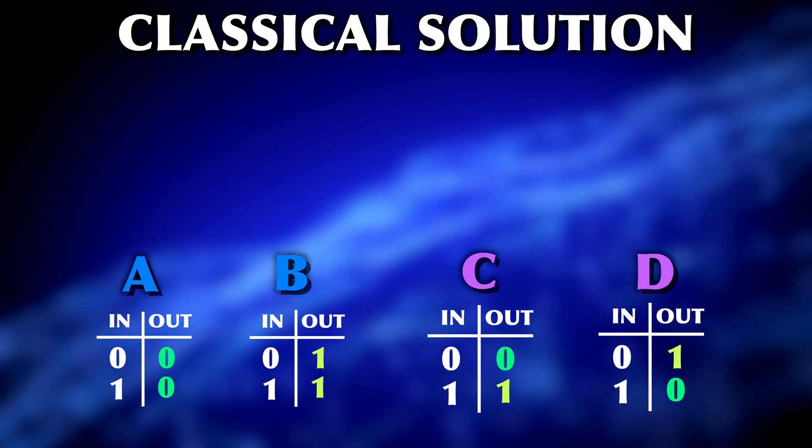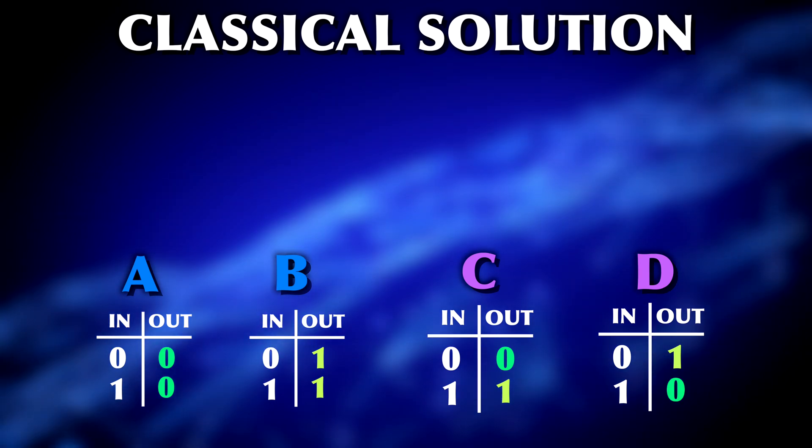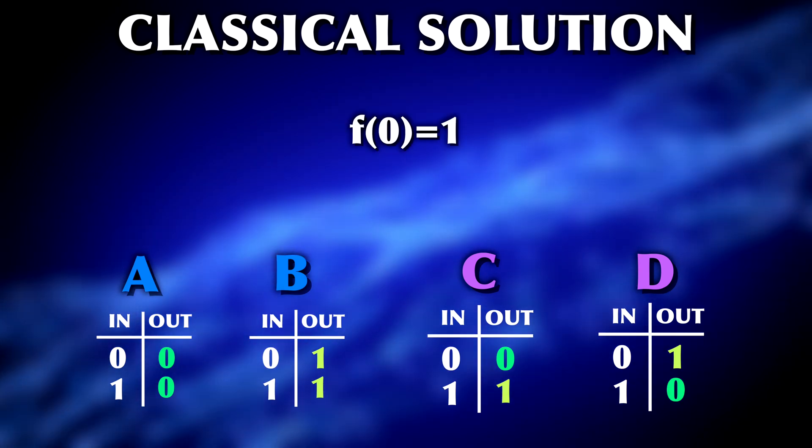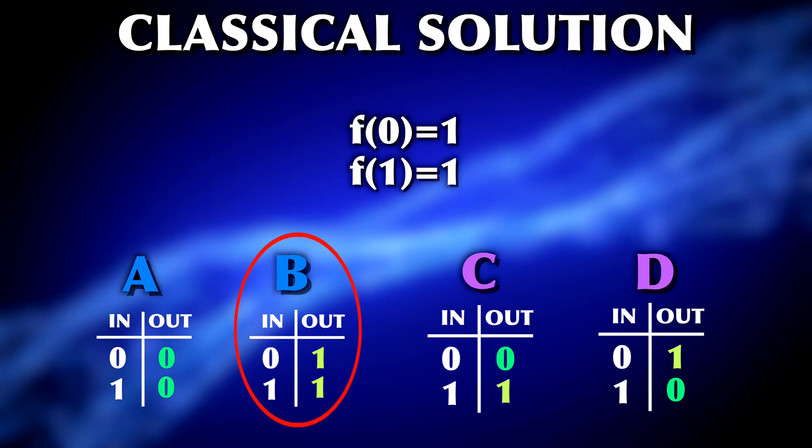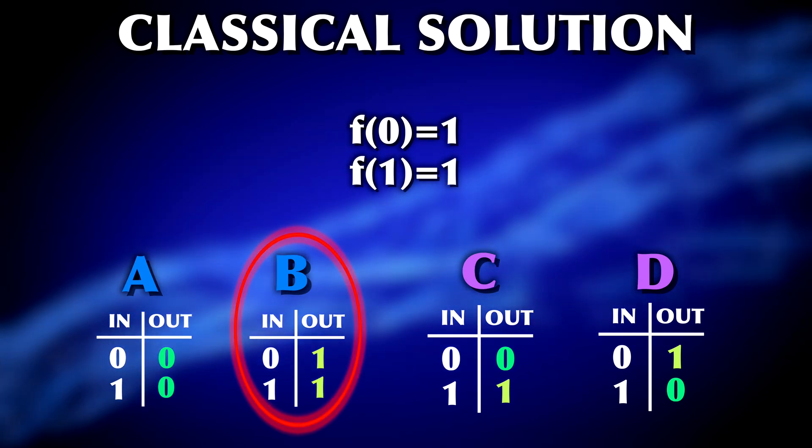To solve this classically, we'd have to run the function once on an input of 0 and once on an input of 1. And then we could directly tell whether it's case a, b, c or d.